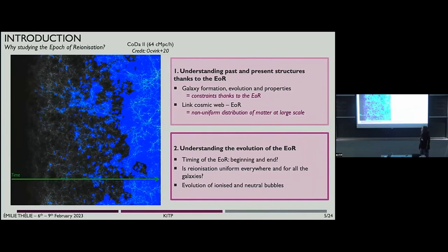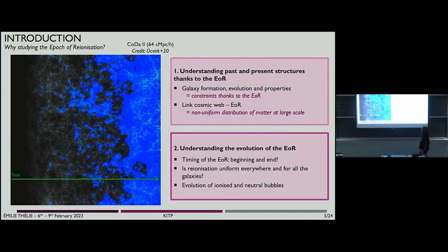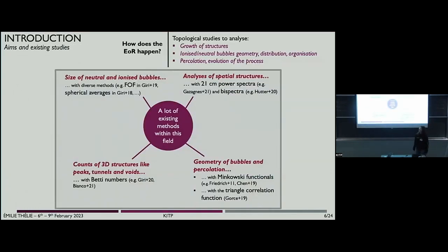Why study this epoch? It's because that's when the first structures emerged. We can study galaxy formation, evolution, and properties thanks to this epoch. They're also really connected with the cosmic web. But what I want to talk about more is the understanding of the global evolution of this process — for example, the timing of reionization is not well constrained. We also wonder if the ionization was uniform everywhere, and what is the evolution of the ionized and neutral bubbles.